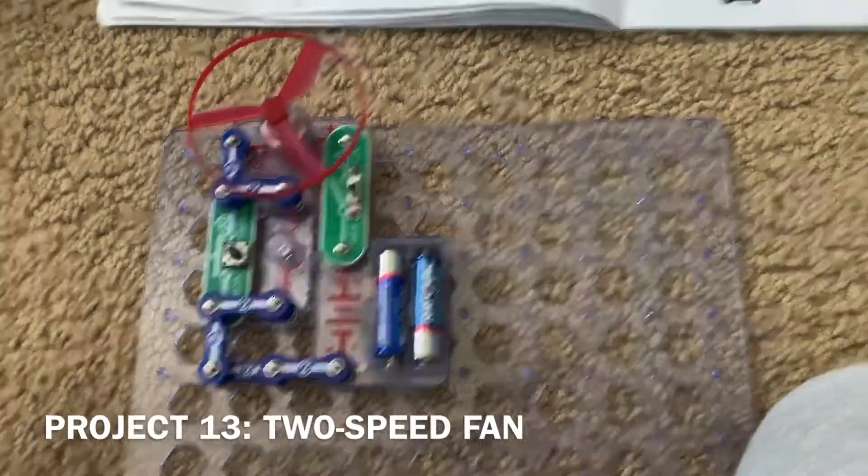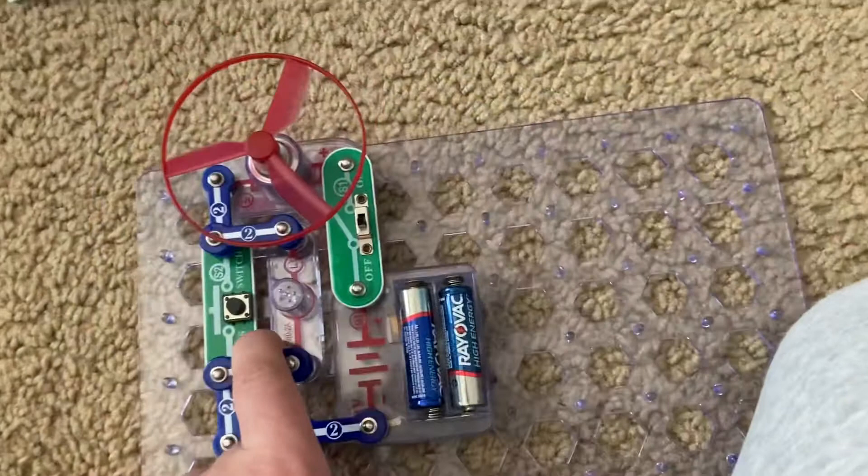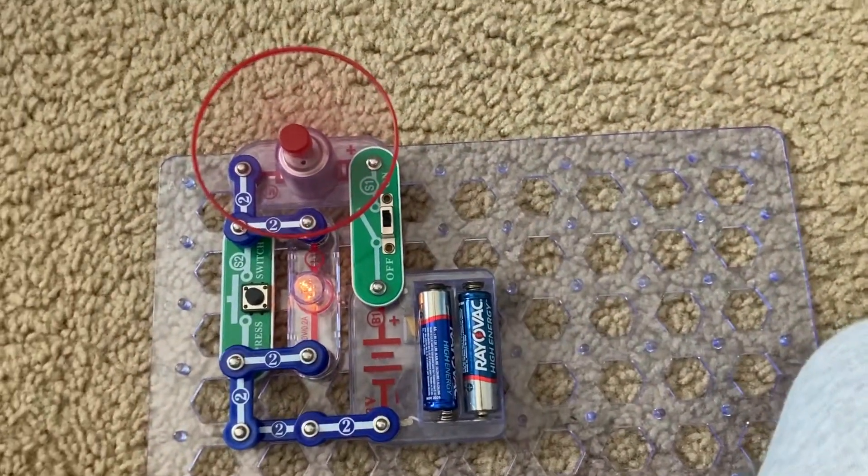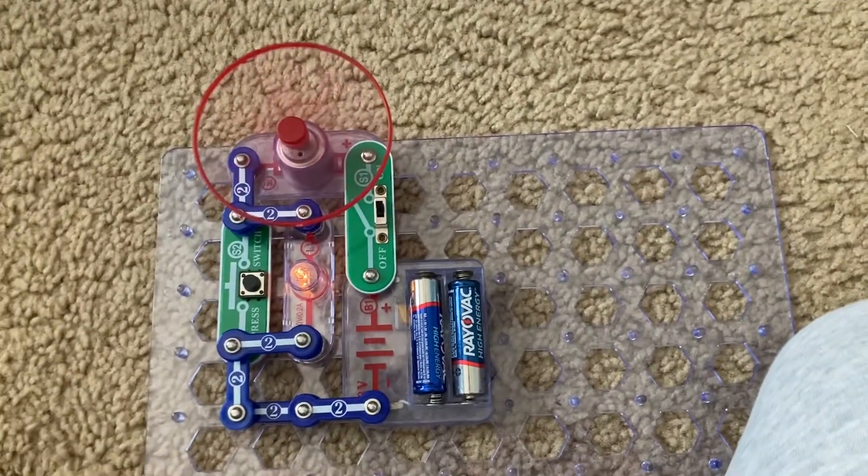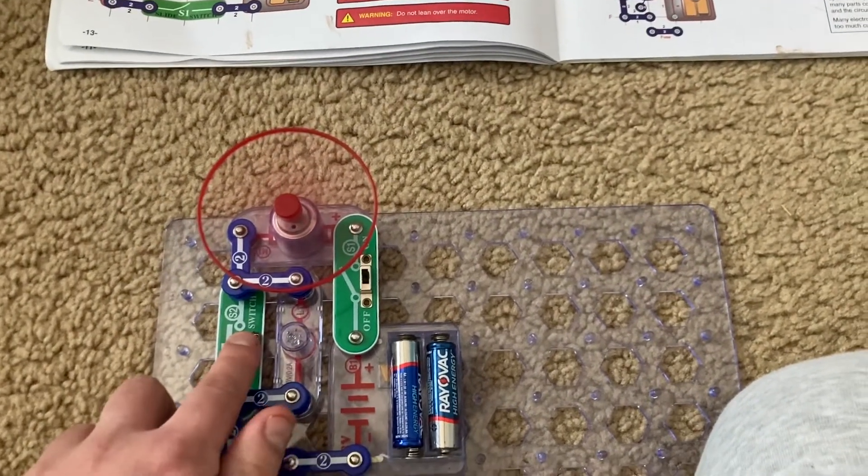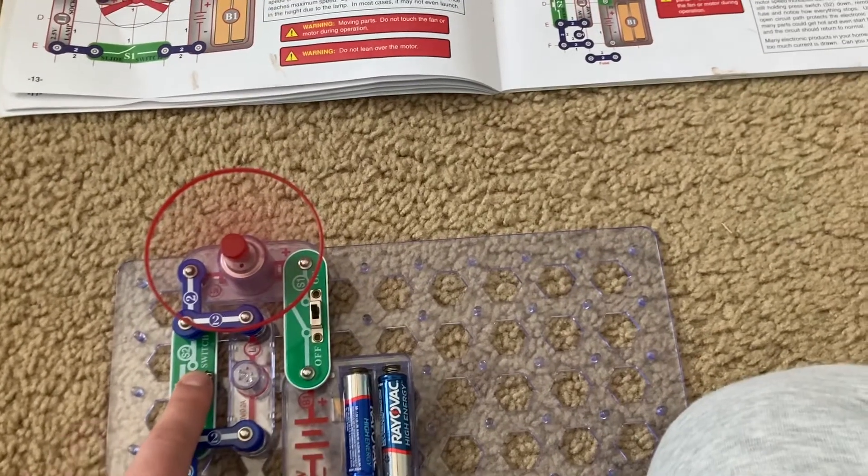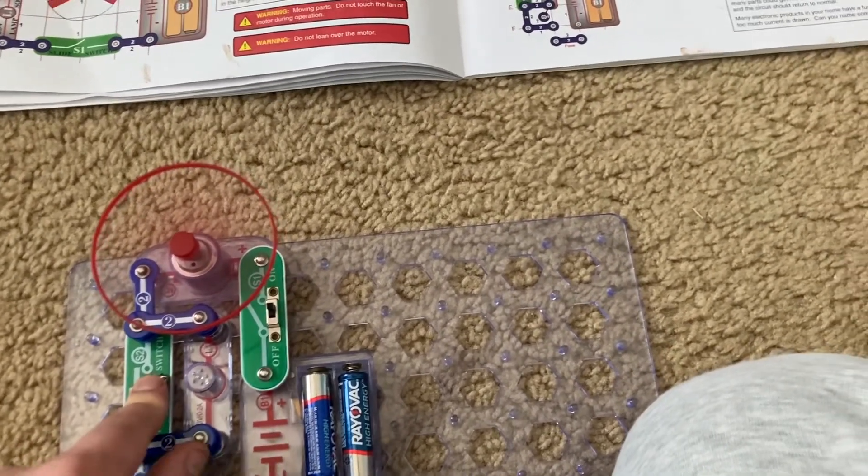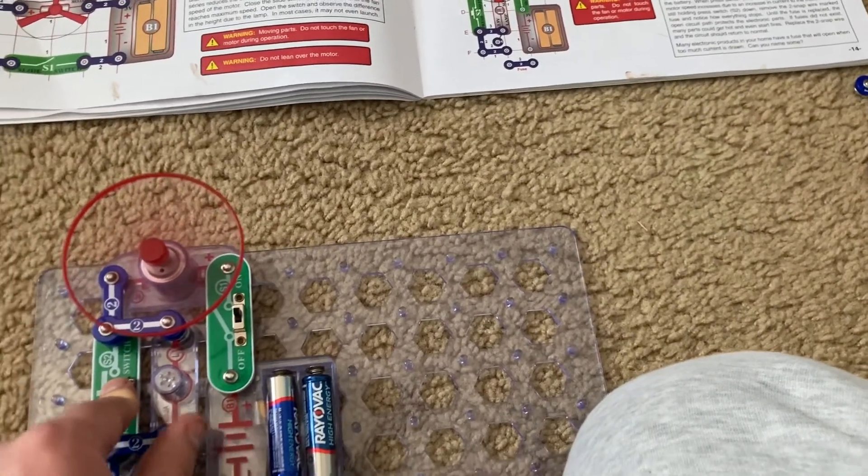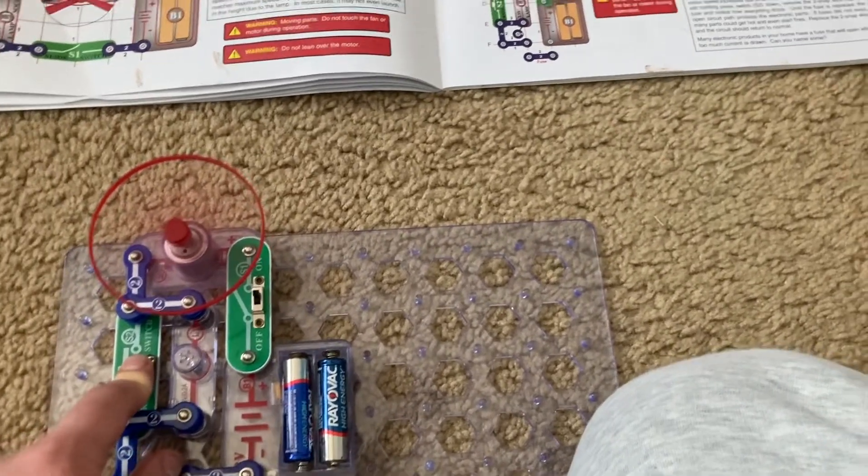Number 13 is the two-speed fan. I have both the slide switch and the press switch included in this circuit, and I'm first going to turn on the former. The motor spins, but not very fast. However, when I push and hold down the press switch, the lamp goes out, but the fan rotates at full speed now. That's because pushing the press switch bypasses the lamp, which is otherwise included in this circuit, and restricts the current flowing through the motor.